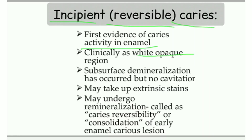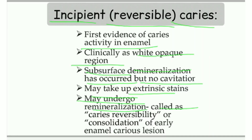Incipient caries appears clinically as a white opaque region — white opaque patches on the enamel surface. Subsurface demineralization has occurred but there is no cavitation yet; only surface demineralization is happening. It may take up extrinsic stain and appear brownish or of a different color. It may undergo remineralization, called caries reversibility — with proper fluoride treatment or oral hygiene, this reversible caries can revert to normal tooth structure. This is called consolidation of early enamel caries.